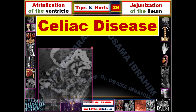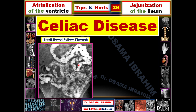In this case of a barium follow-through, the duodenum and jejunum are seen in the left upper quadrant of the abdomen, showing a smaller number of folds compared with the ilium. The ilium, seen in the left lower quadrant, shows multiple folds with an increased number compared with the jejunum. This pattern is called the jejunization of the ilium.